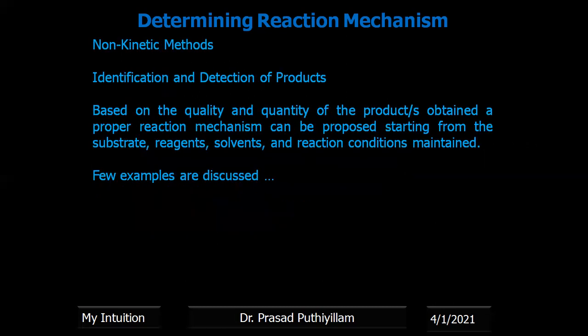The first method is identification and detection of the product. Based on the quality and quantity of the product or products obtained, a proper reaction mechanism can be proposed starting from the substrate — that is, the one which reacts — and with the reagents, solvents, and the reaction conditions which are maintained.